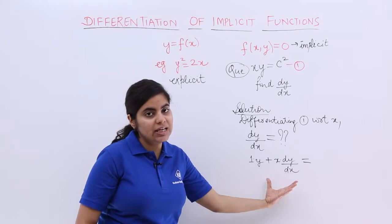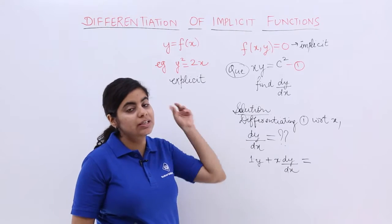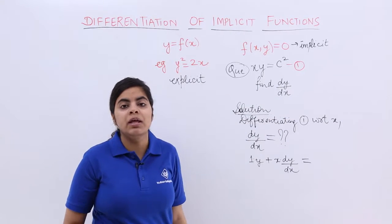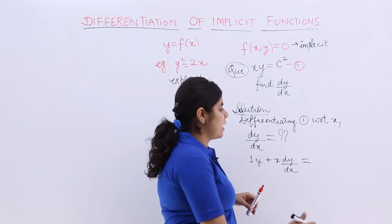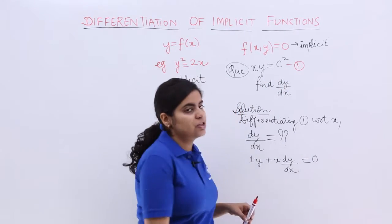If you have been differentiating along the left-hand side of the equation, it is necessary to differentiate along the right-hand side also. So differentiation of c square. c is a constant, differentiation is 0.